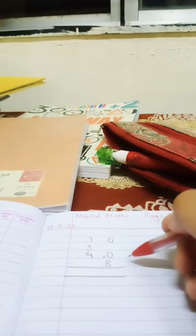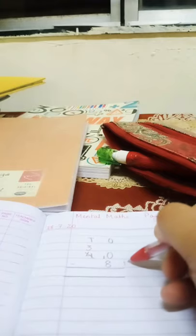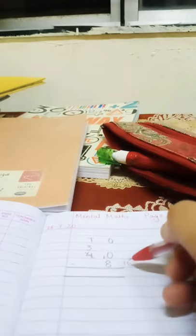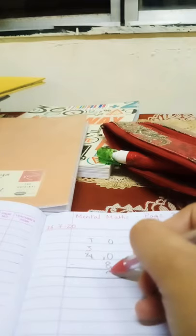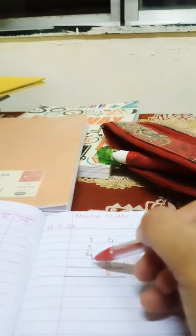We know that we have learned subtraction by the method of backward counting. So we start counting. 10 we do not count. We start counting from 9, 8. So we got two lines here which means your answer over here is 2. 3 minus there is no number, so it remains 3.